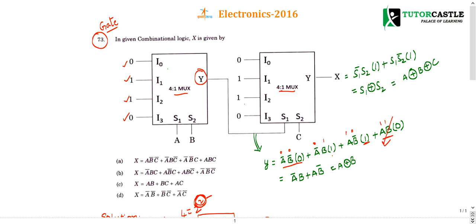So whatever the terms with 0, you can strike it off. Only terms with 1 you can consider: A bar B plus A B bar. So this is similar to XOR gate. A XOR B is nothing but A bar B plus A B bar. Yes or no? Everybody knows this. So this is the y value. Y is given to select S1, and S2 is given as C for the second MUX. Let us substitute at the end. First we will write in terms of S1, S2 only.